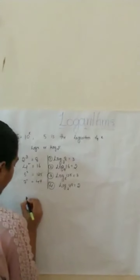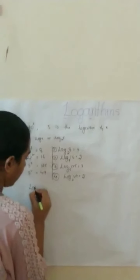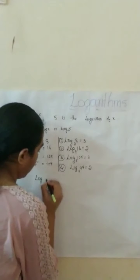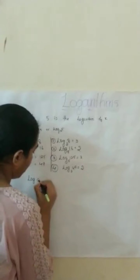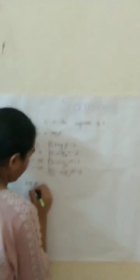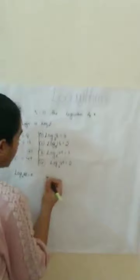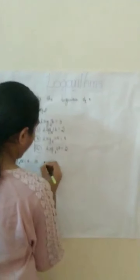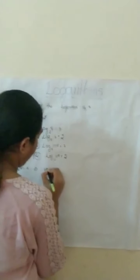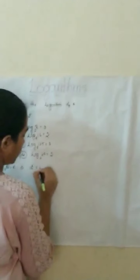From this we conclude that log base a of n equals x implies a power x equals n.